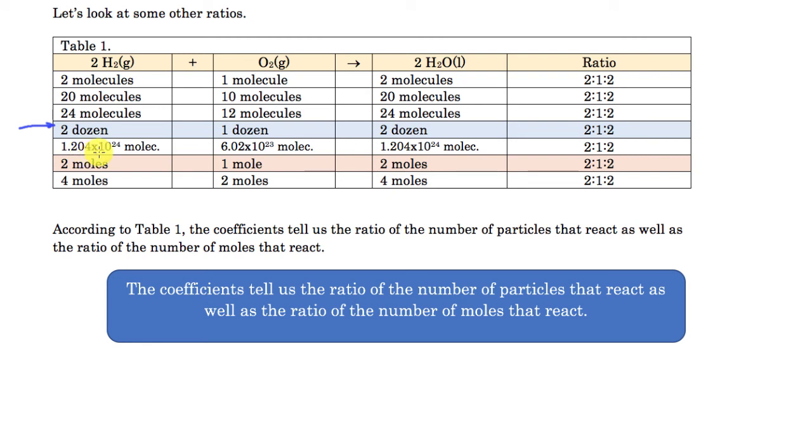If I have 1.204 times 10 to the 24 molecules of hydrogen, and I also have 6.02 times 10 to the 23rd molecules of oxygen, and then of course the same number for the molecules of water, again, it's a two to one to two ratio. It's still holding, staying the same. Therefore, we can translate this into two moles, to one mole, and two moles, because this is double the number of this. So therefore, the balanced equation can not only tell us the number of molecules, dozens, but actually more importantly, it can tell us the number of moles.